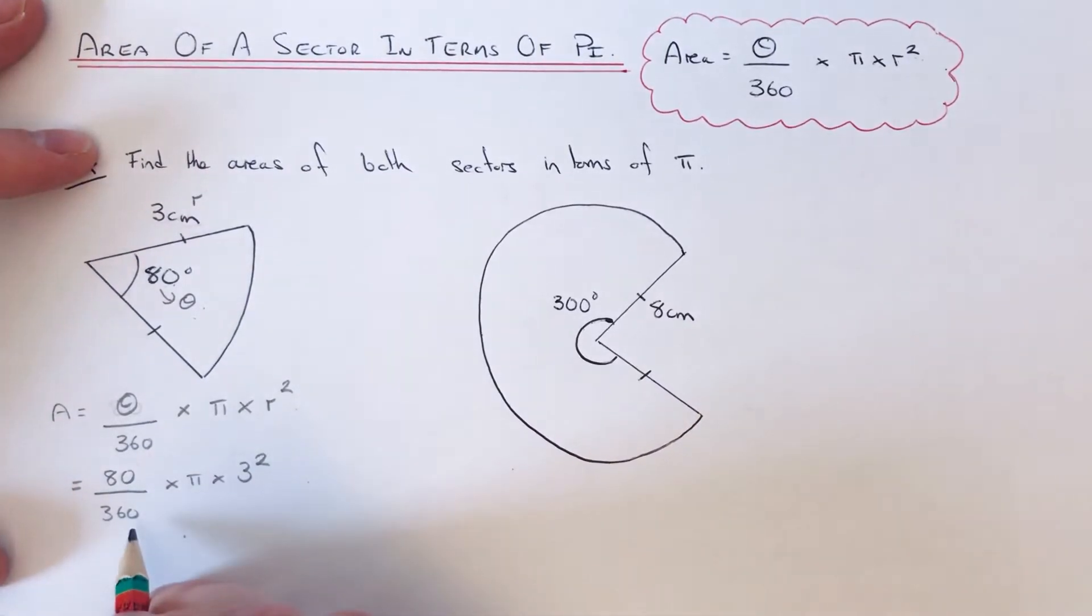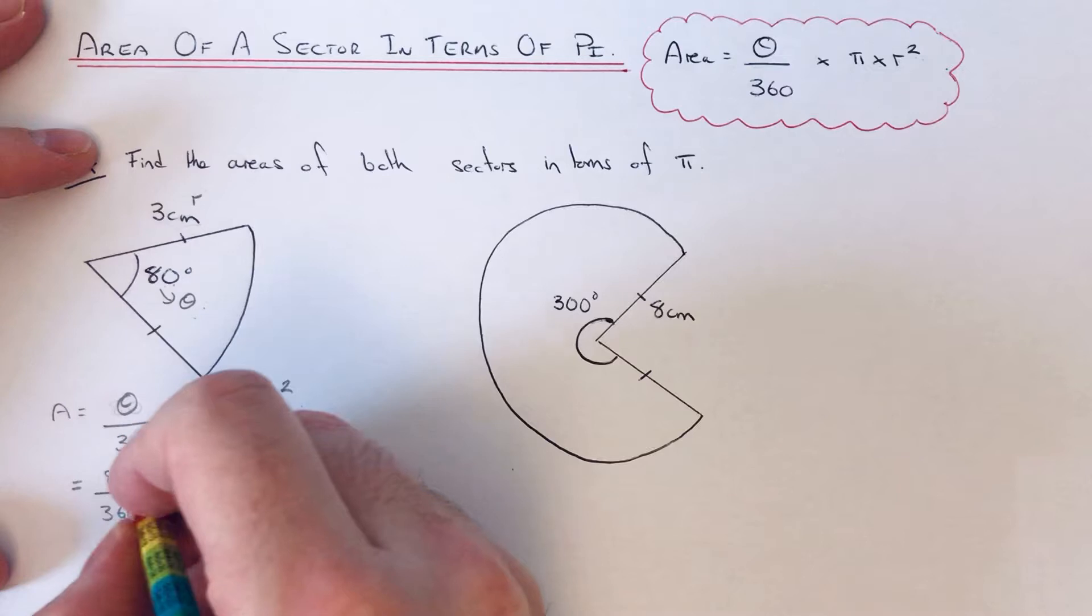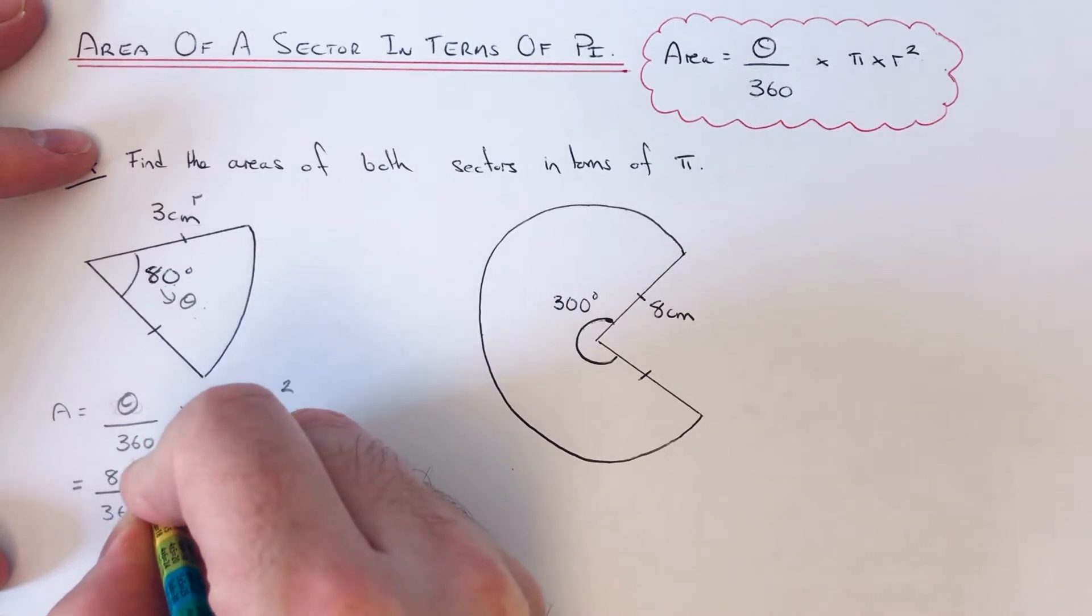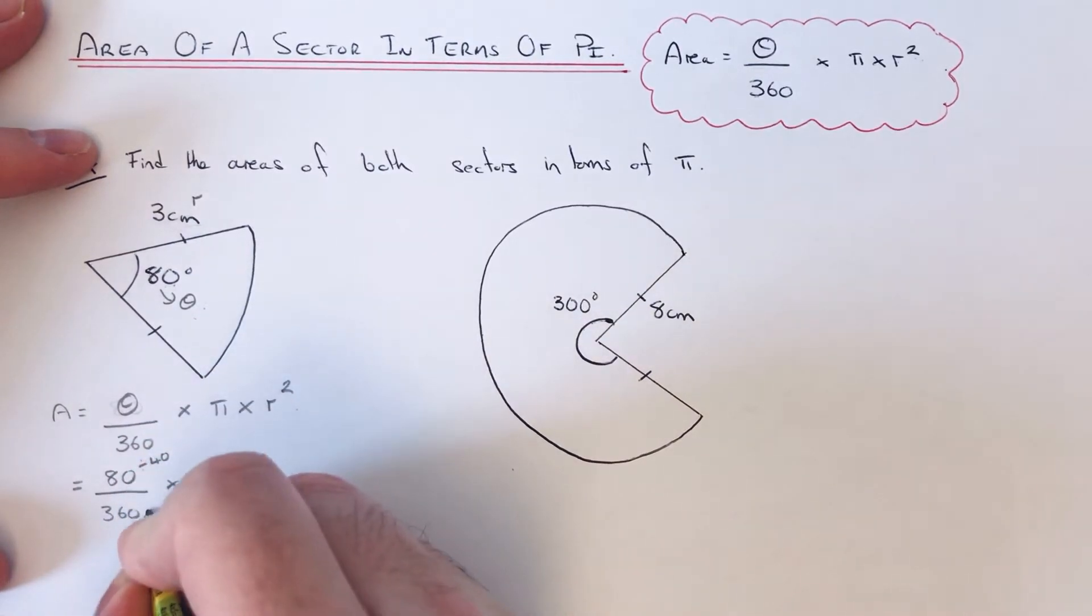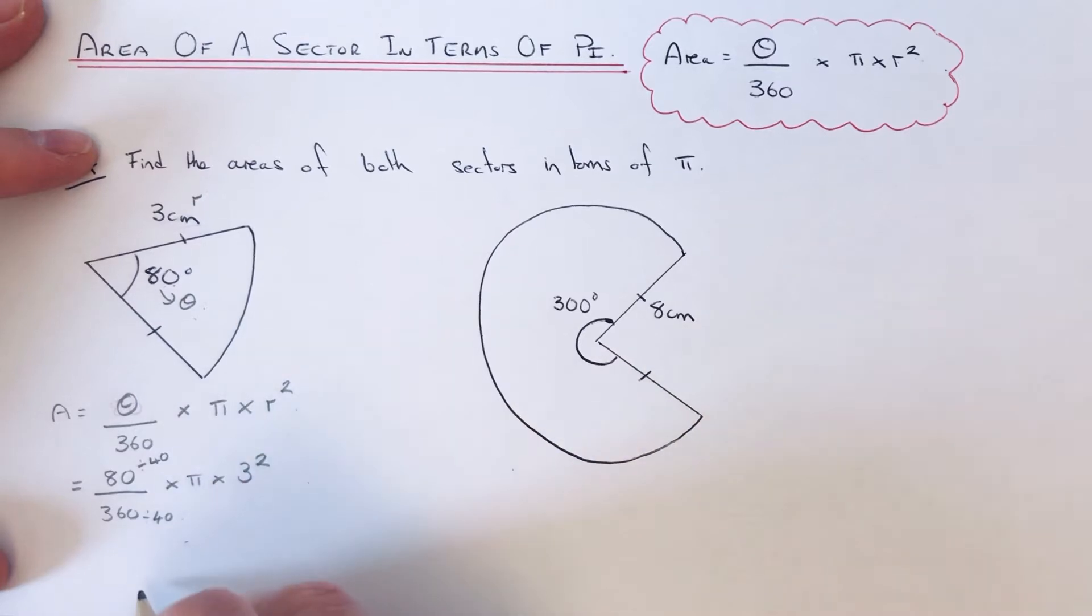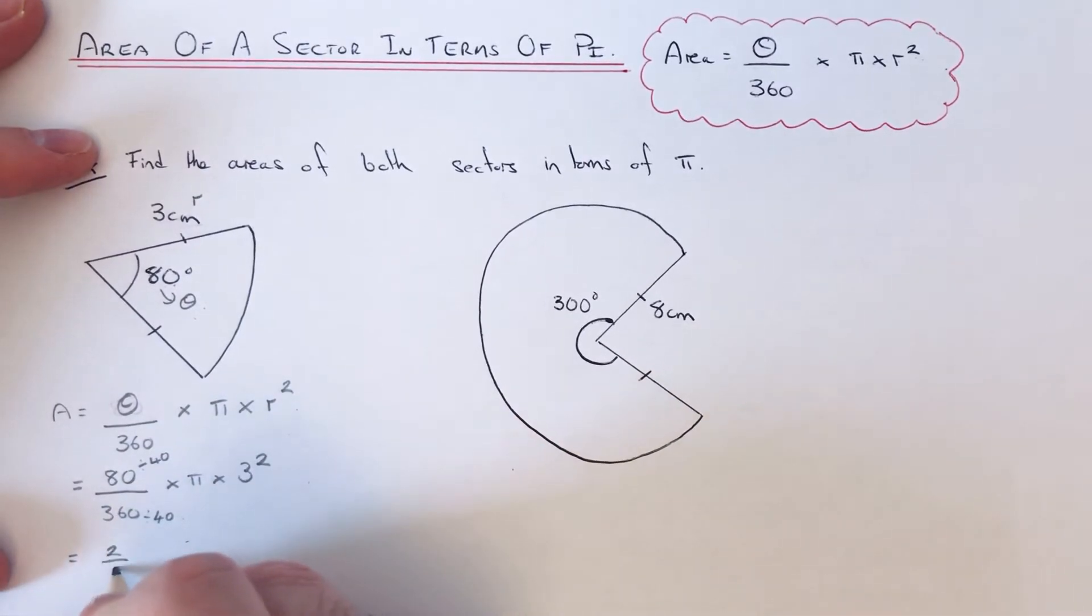What we can do is first simplify this fraction. So 80 and 360, they're in the 40 times tables. We can divide the top and bottom by 40. That will give us 2 ninths. And then we're multiplying that by pi, and 3 squared is 3 times 3, which is 9.